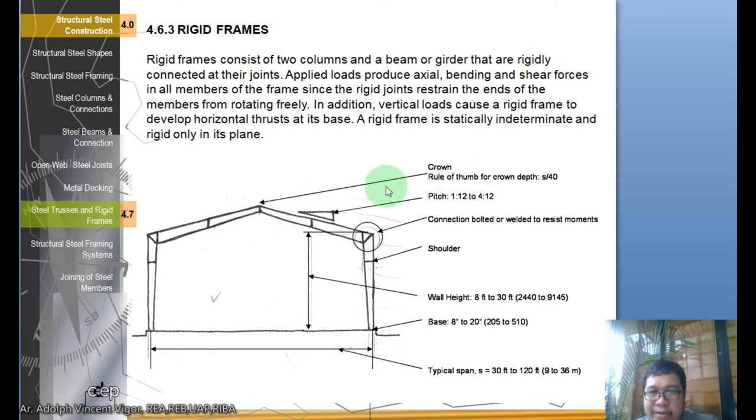These are the details. This is the crown - the rule of thumb for crown depth is S over 40. The pitch is 1 is to 12 to 4 is to 12. The connection here is bolted or welded to resist movements. This is the shoulder. The height is 8 feet to 30 feet, or 2.4 to 9.14 meters. The base is 8 inches to 20 inches, and the typical span is usually 9 to 36 meters.